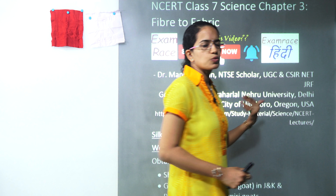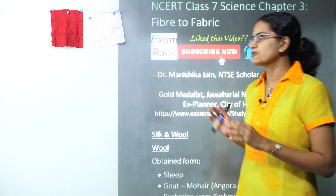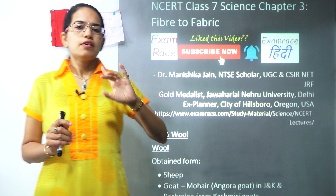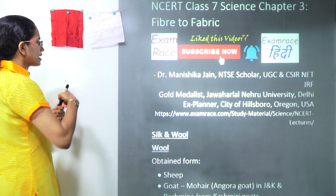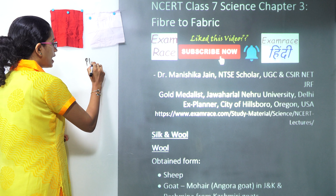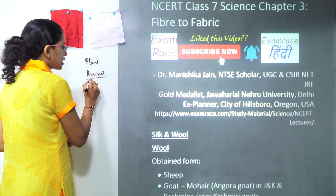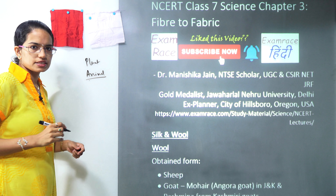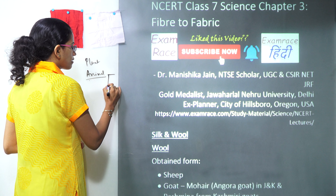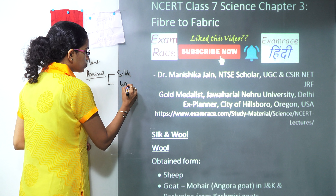Welcome again. Today we will start with NCERT class 7th, the third chapter. This chapter focuses on fiber to fabric. We have to make one thing very clear: we can obtain fiber from both plant as well as animal. However, this chapter we would focus only on the fibers obtained from animals. So our focus today would be silk and wool, the two fabrics.